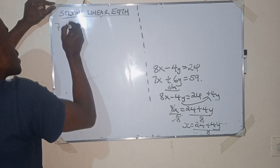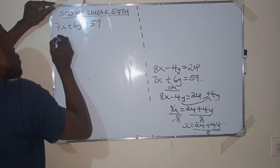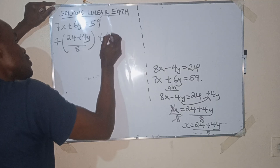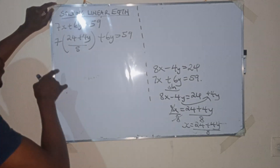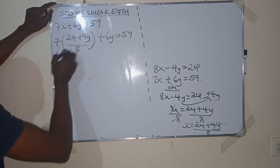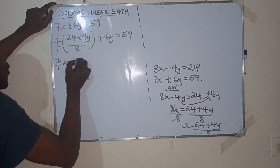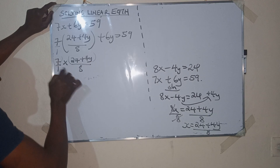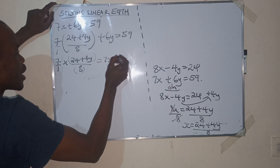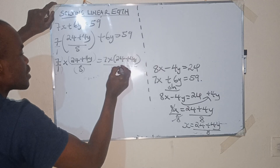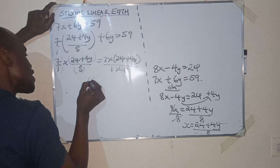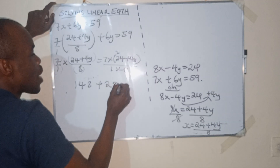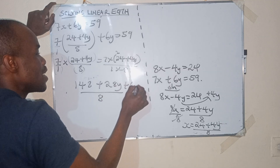The second equation is 7x plus 6y equals 59. We replace x with the bracket 24 plus 4y all over 8. So we have 7 times bracket 24 plus 4y all over 8, plus 6y equals 59. Multiplying numerator by numerator: 7 times bracket 24 plus 4y gives 168 plus 28y all over 8, plus 6y equals 59.